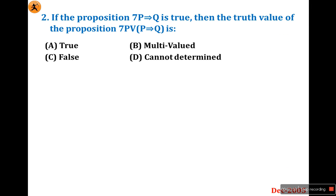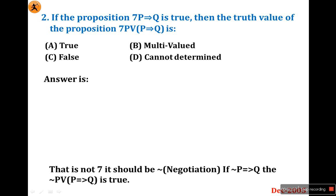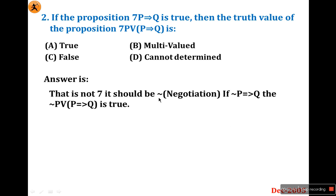Look at the second question. The proposition uses a negation symbol — actually it is not a 7, it is negation. The negation of P implies Q is true. Then the truth value of the proposition — negation of P or P implies Q — is what we need to find. If it is taken as a 7, definitely the option would be D: cannot be determined. It may be a typing mistake.